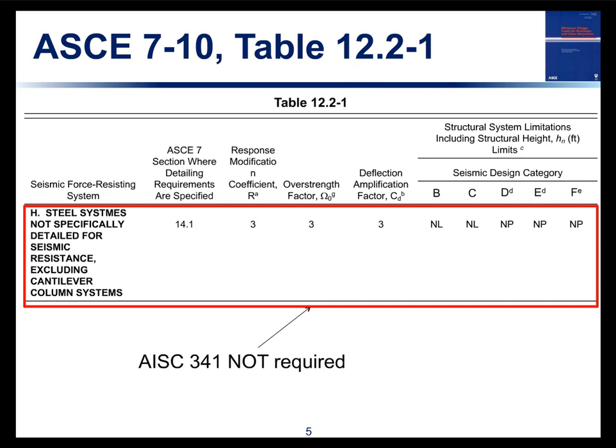There is a system I always feel is important to point out — System H, which are steel systems not specifically detailed for seismic resistance. These don't include cantilever column systems. Basically this is a system that meets the requirements of the main specification, AISC 360, without any of the additional requirements of the seismic provisions. This is your base level structural steel building, and you can see that this is the R equals 3 system — commonly known as the R equals 3 system — also has an overstrength and C sub D factor of 3 as well. If we look at the limitations on this system, there's no limit (NL) in seismic design categories B and C, so this system applies to pretty much any building in those seismic design categories.